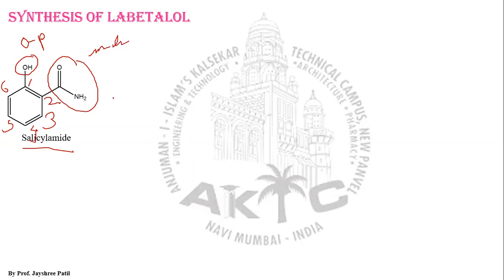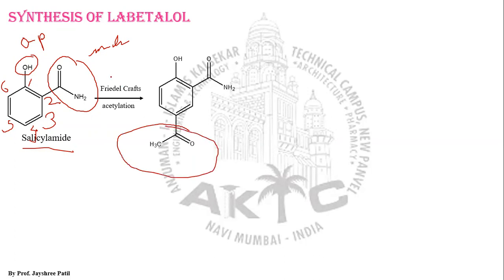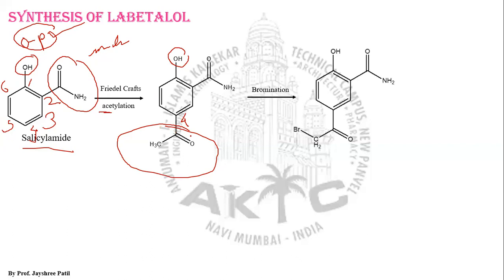When salicylamide undergoes Friedel-Crafts acetylation as the first step, an acetyl moiety is added. This incoming acetyl moiety will go to the para position, i.e., the fourth position, because when the molecule presents both an ortho/para directing group and a meta directing group, the dominating effect is from the ortho/para directing group — that is the hydroxy group. So the acetyl moiety goes to the para/fourth position.